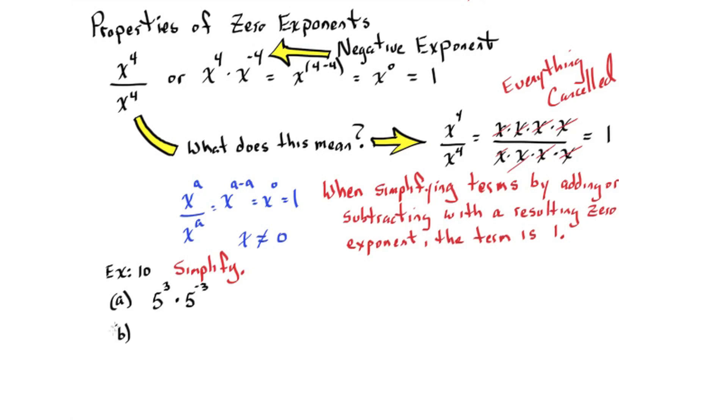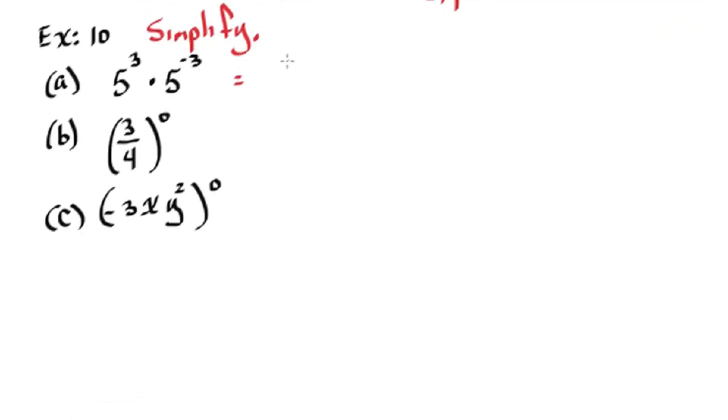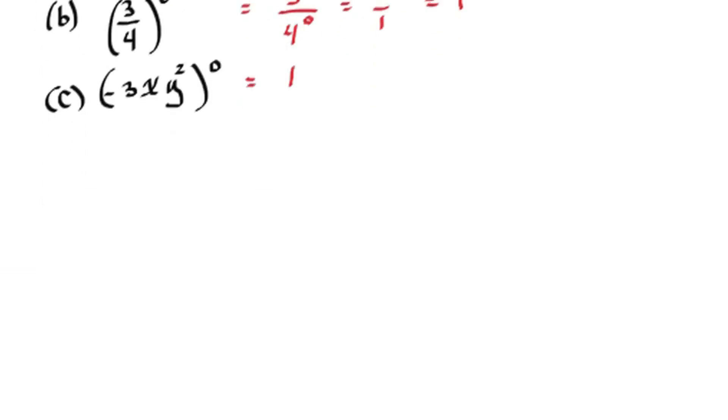So let's take a look at example 10. Simplify. Pause. So five to the third times five to the negative three is five to the zero or one. Three-fourths to the zero is one. Anything raised to the zero is one except for zero.